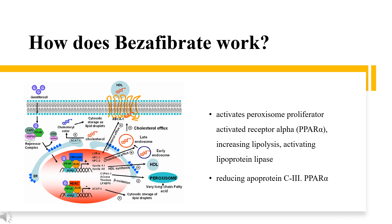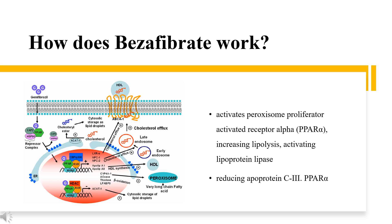Mechanism of Action. It is generally accepted that Bezafibrate is likely an agonist of PPAR-alpha. However, certain other investigations have also suggested that the substance might also elicit some effects on PPAR-gamma and PPAR-delta.